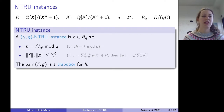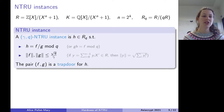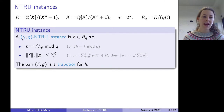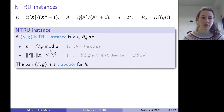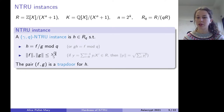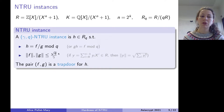An NTRU instance is an element H in R modulo Q which can be written as F over G mod Q for some small F and G. I parameterize my NTRU instance by two parameters: Q, a modulus, and gamma, which measures how small F and G are. The Euclidean norm of F and G — taking the Euclidean norm of the coefficient vector when they are polynomials — is bounded by sqrt(Q / gamma). So the larger gamma, the smaller F and G.